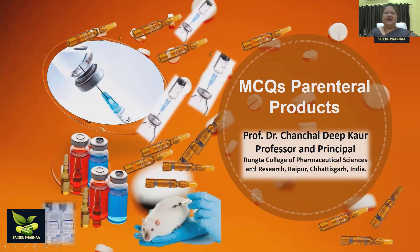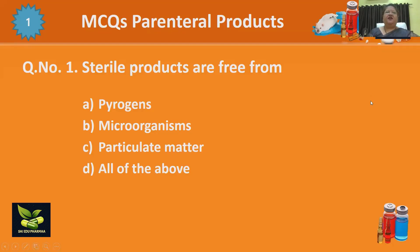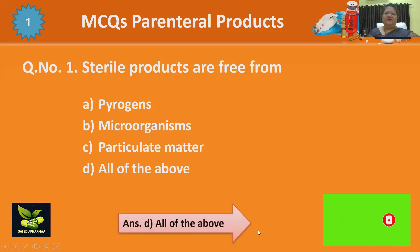First question: sterile products are free from — options are pyrogens, microorganisms, particulate matter, and all of the above. The answer is all of the above, because sterile products should not have any type of foreign material like microorganisms, pyrogens (which are lipopolysaccharide metabolite products of microorganisms), or any particulate matter.